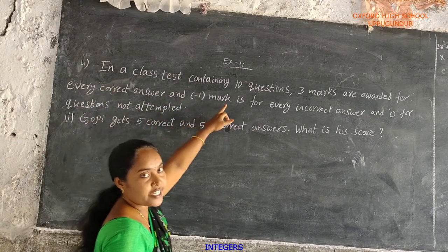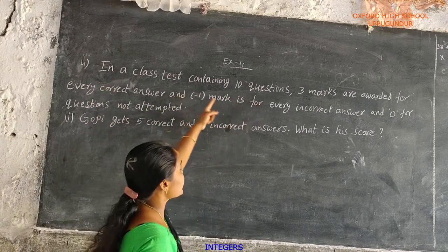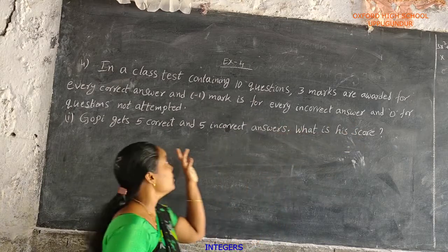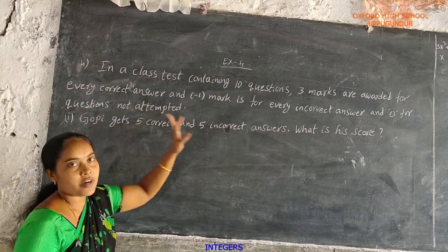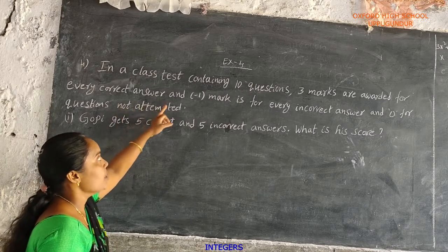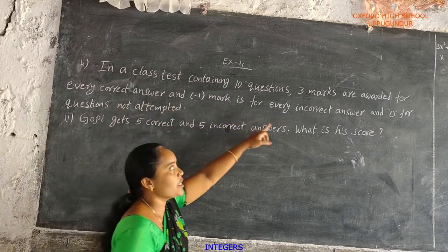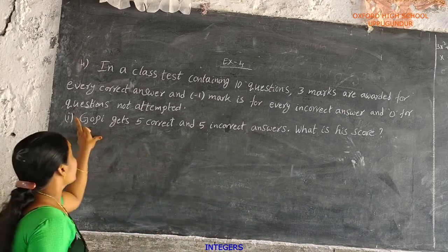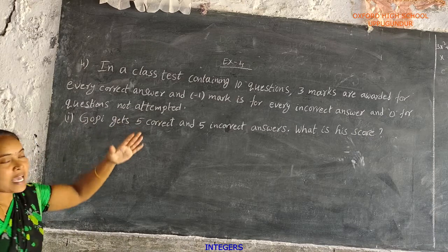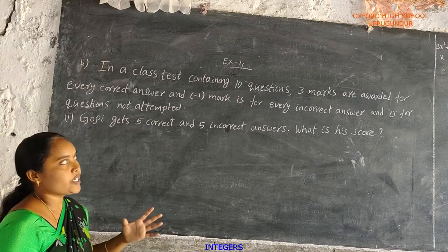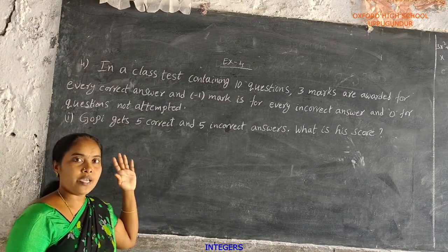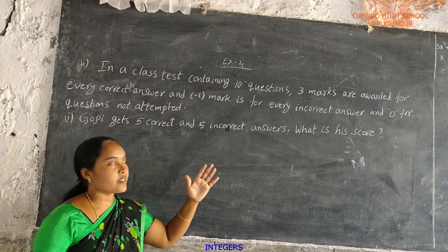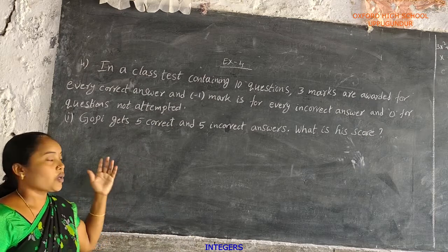In a class test containing 10 questions, 3 marks are awarded for every correct answer, minus 1 mark is awarded for every incorrect answer, and 0 marks for not attempted.